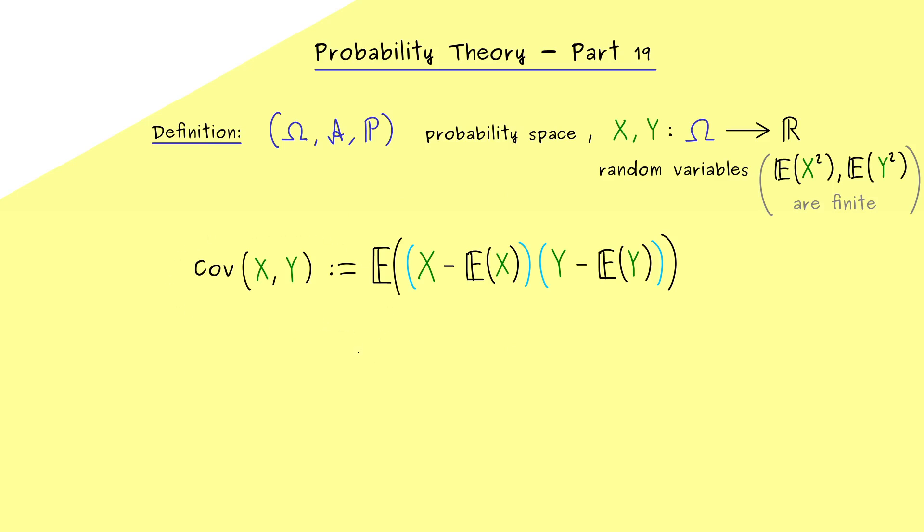However, similar to the ordinary variance, we can reformulate this formula here. This means we just expand this product here. So we get X times Y minus X times the expectation of Y. And similarly, minus Y times the expectation of X. And finally, the last term would be plus the two expectations multiplied.